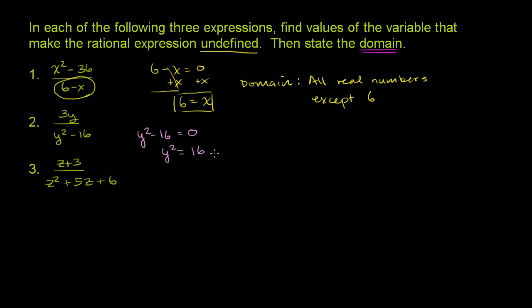Or y could be the positive or negative square root of 16. So if you take the square root, the positive and negative square root of this, or you could say y is equal to plus or minus 4. So either positive 4 or negative 4 is going to make the denominator 0 and will result in an undefined expression. So you have to exclude these.